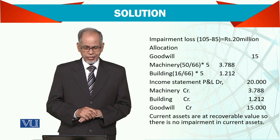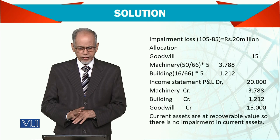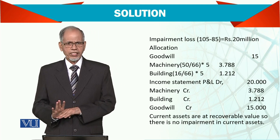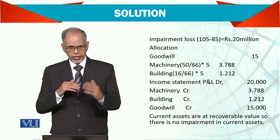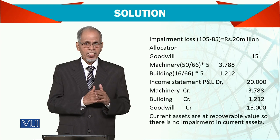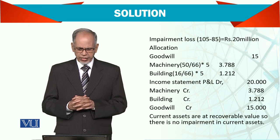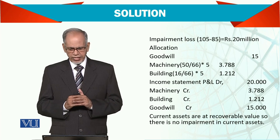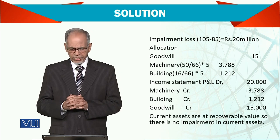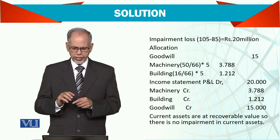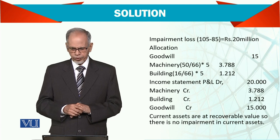Taking both assets, their total is $66 million. We take the remaining $5 million impairment loss and allocate it pro-rata: for machinery, 50 divided by 66 multiplied by 5 = $3.788 million; for building, 16 divided by 66 multiplied by 5 = $1.212 million. Adding these two figures: 3.788 plus 1.212 equals 5.